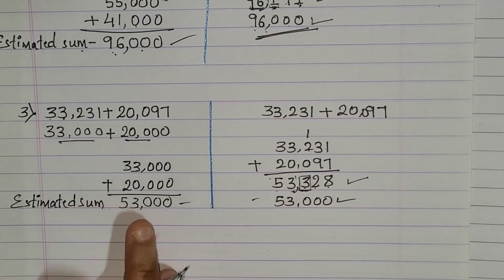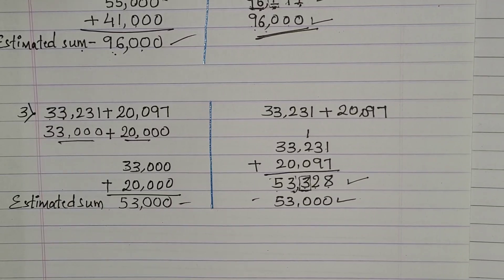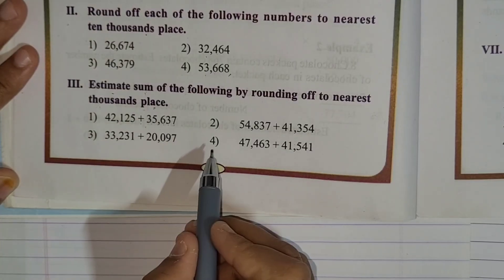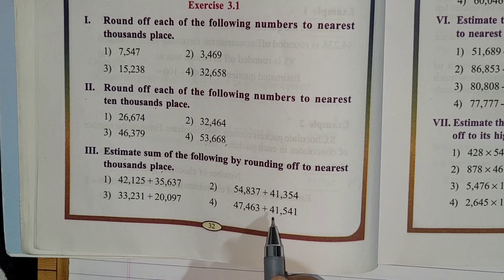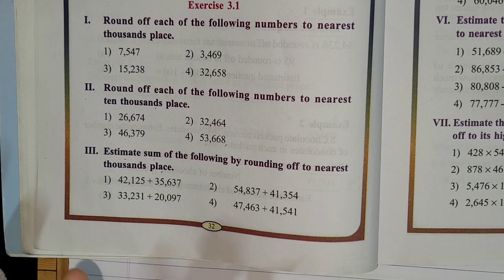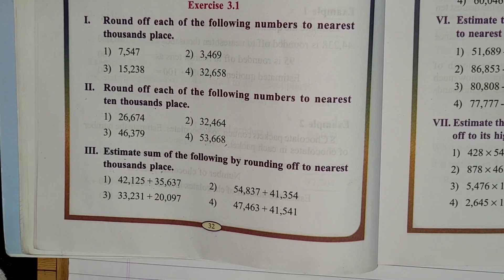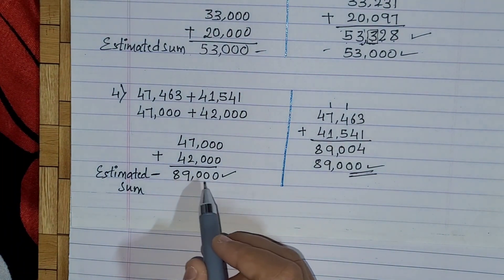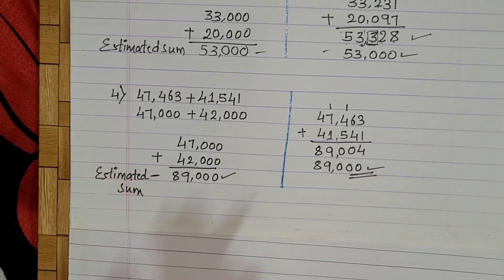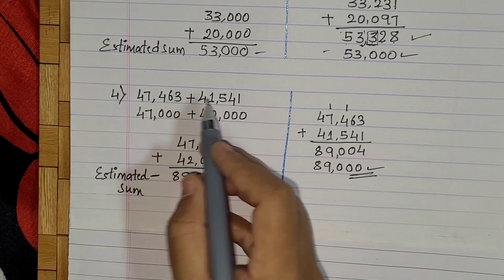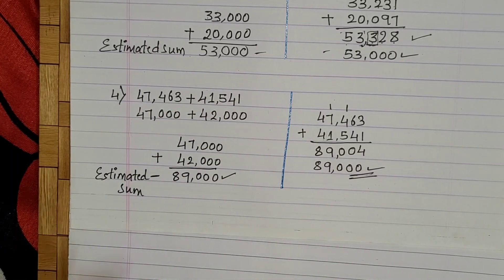Now let's move to the fourth and last one: 47,463 plus 41,541. Children, pause the video and try to solve it by yourself, then continue the video and check your answer with mine. If it is correct, very good! If you made any mistakes, it is okay — try to solve it once again. The answer is 89,000, and after verification you also get 89,000.